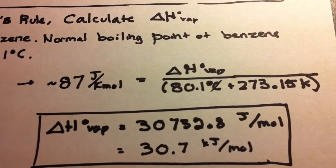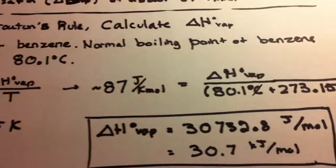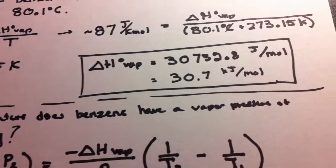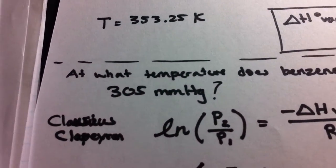Now, that's how we find delta H of vaporization. If we want to extend this further, what we would do is ask, what temperature does benzene have a vapor pressure of 305 milligrams of mercury.